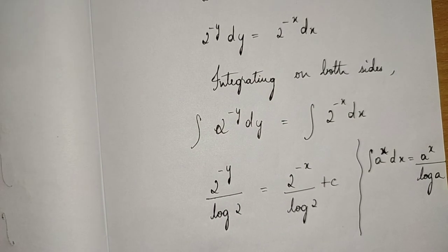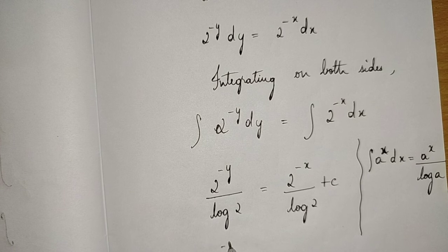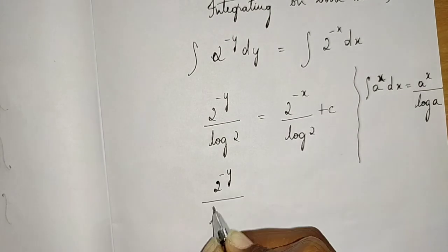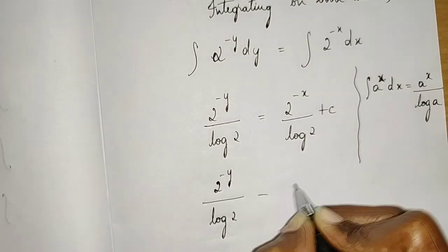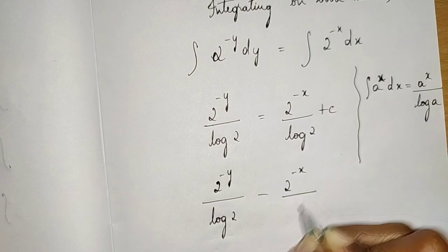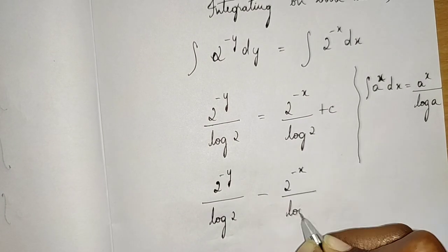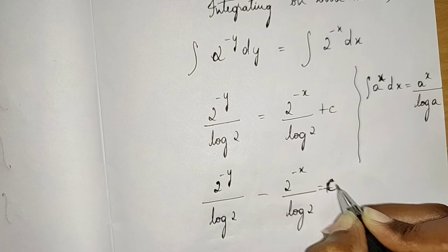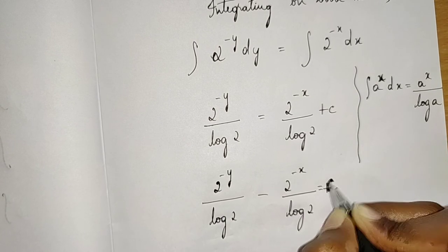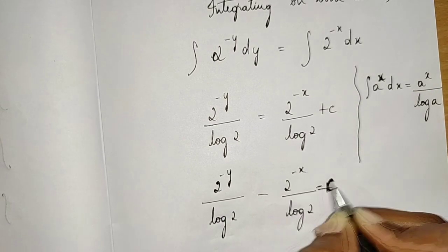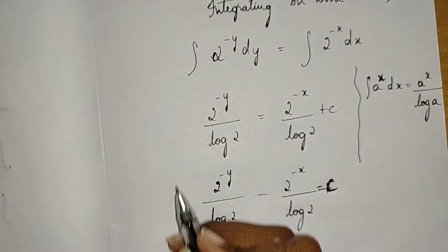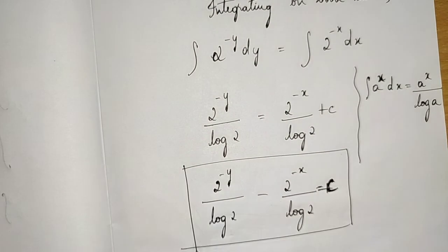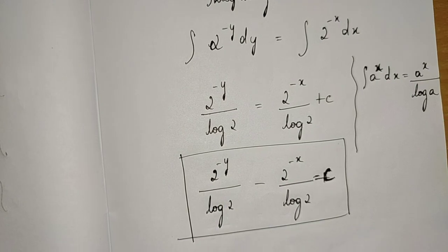Rearranging, our answer is: 2^(−y)/log 2 − 2^(−x)/log 2 = c. This is our required differential equation.